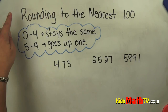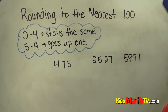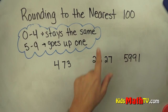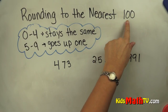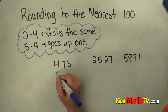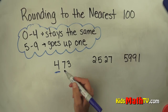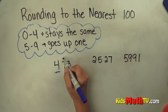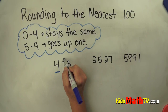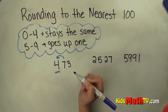In this lesson you will learn about rounding to the nearest hundred. When we're rounding to the nearest hundred, we want to identify the hundreds place. What I like to do is underline the number I'm rounding to, and the number to the right is going to tell this number what to do.